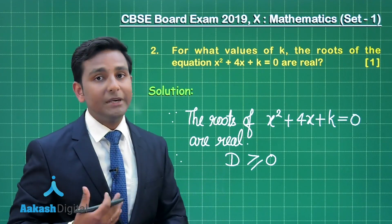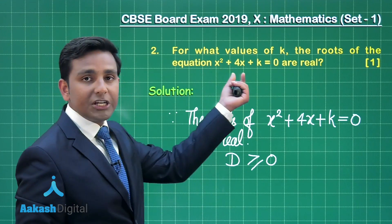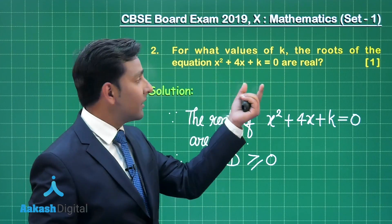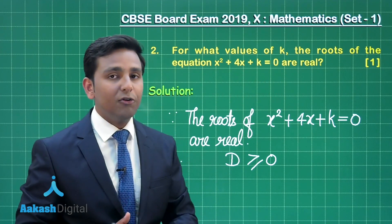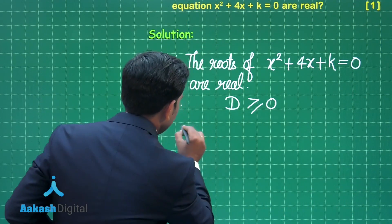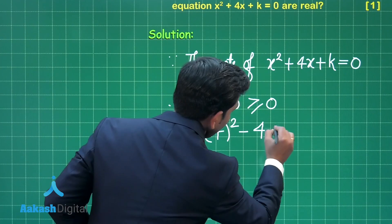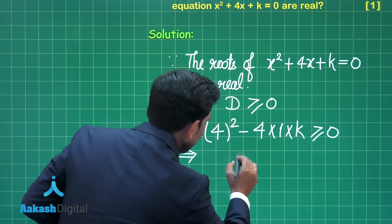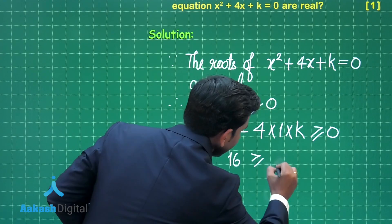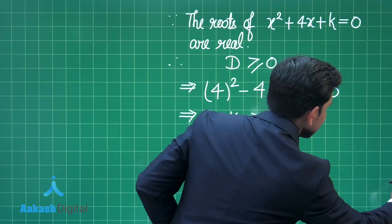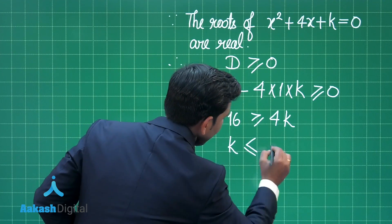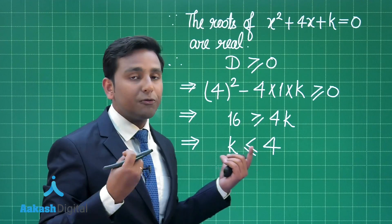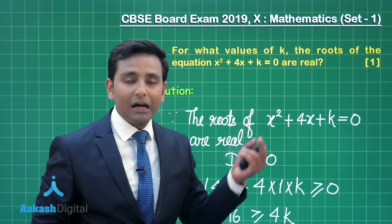The discriminant is found using b² - 4ac. Here b is the coefficient of x, which is 4; a is the leading coefficient, which is 1; and c is the constant term, which is k. So we write: 4² - 4(1)(k) ≥ 0, which simplifies to 16 ≥ 4k, and further simplification gives k ≤ 4. So for all real values of k less than or equal to 4, the roots of this quadratic equation are real.